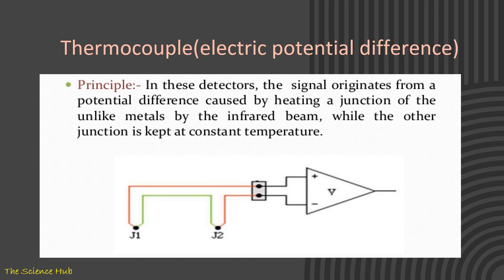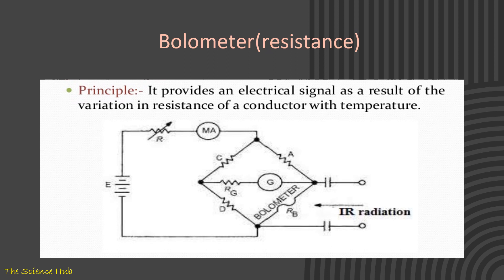Thermocouple principle: in this detector, the signal originates from a potential difference caused by heating a junction of unlike metals by the infrared beam, while the other junction is kept at constant temperature. Next is bolometer—it provides an electrical signal as a result of variation in resistance of a conductor with temperature.